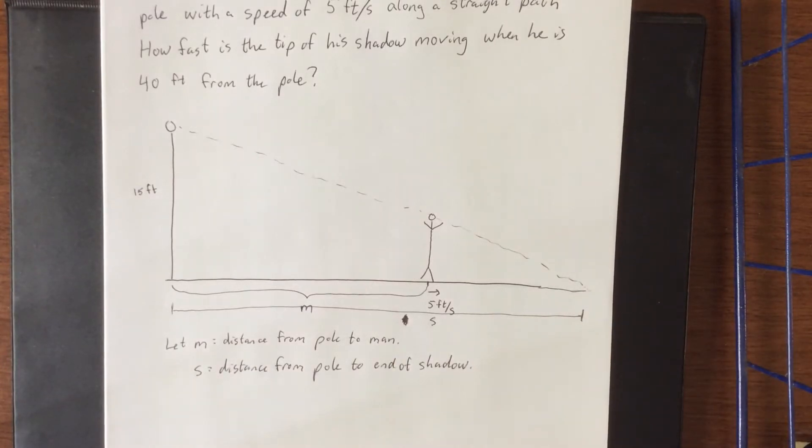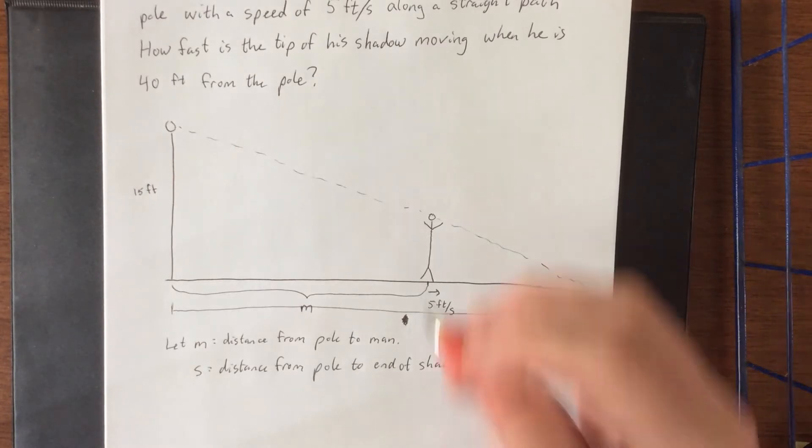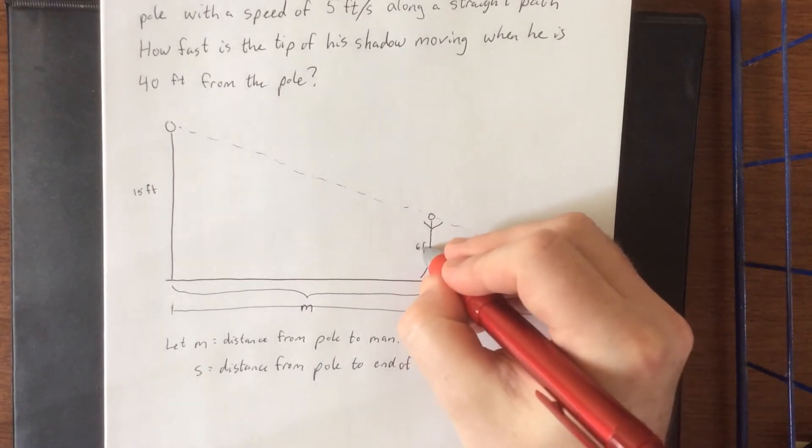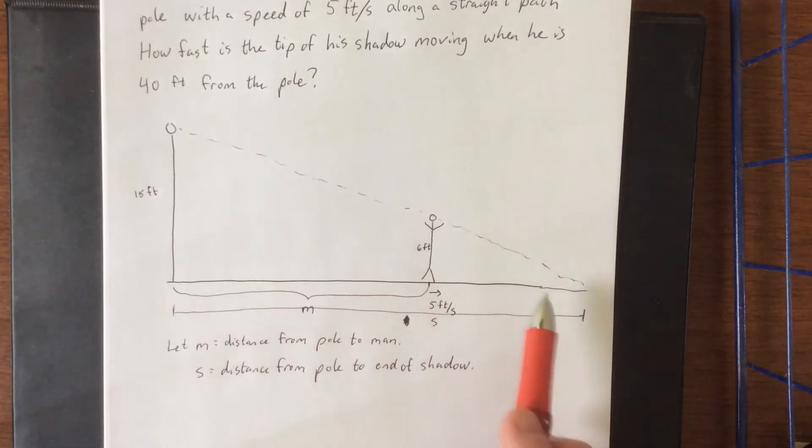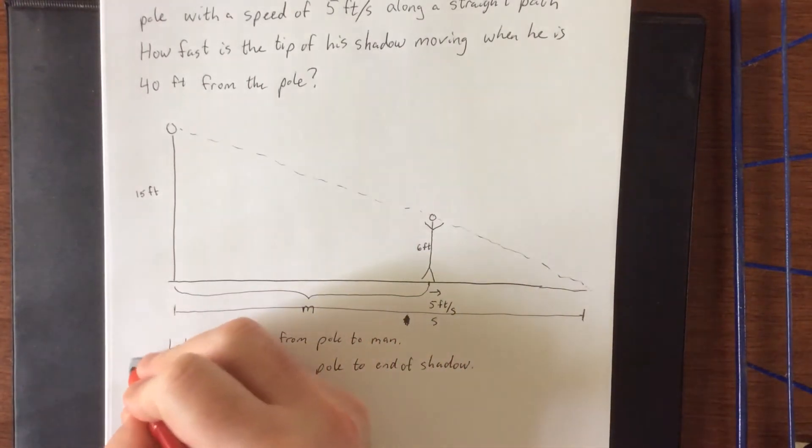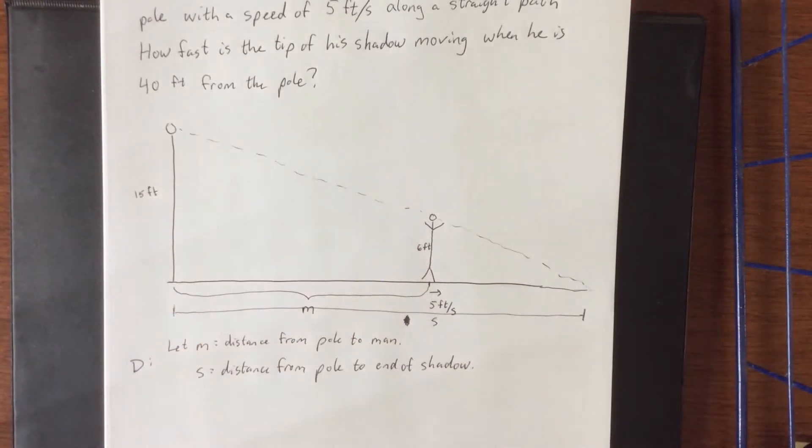Now what we're looking to do in this problem is try to relate these variables together. We also know something that doesn't change is that the man is 6 feet tall. Now what I'm seeing here is it appears as though we have a couple of similar triangles. So, oh sorry, this is the D step of DRIPS. So D, define the variables that you need.